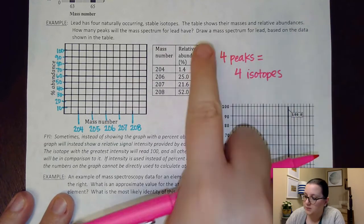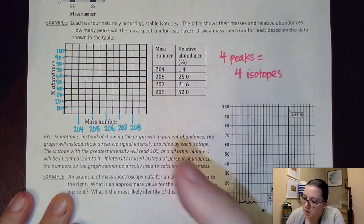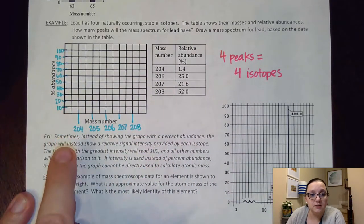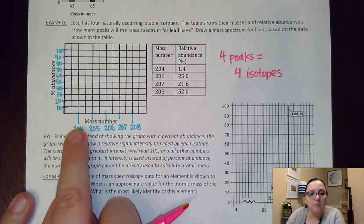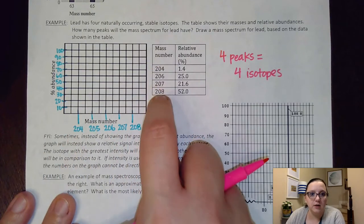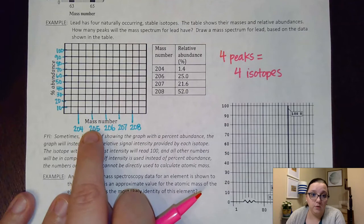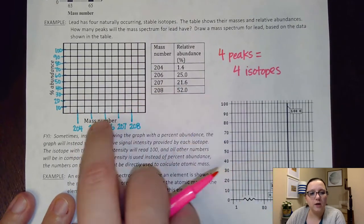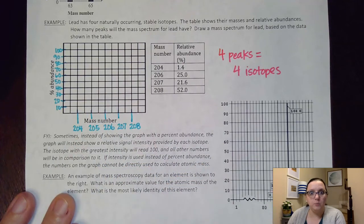So then it says, draw the mass spectrum for lead based on the data shown. So I've gone ahead and numbered off here my percentages. I also went and put kind of the range of numbers I see here. Now, I went ahead and included 205, even though I don't see a 205 isotope here, just so I could show that that number, I wouldn't have a peak for it. So kind of leaving it as a blank spot.